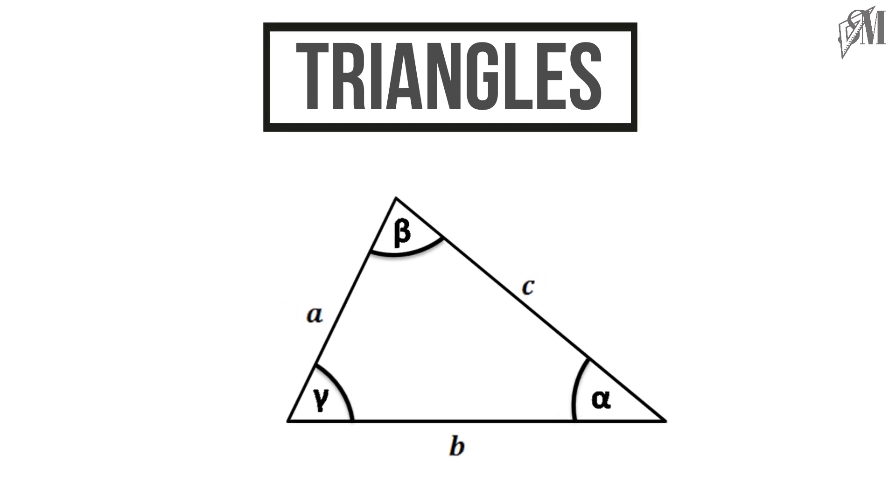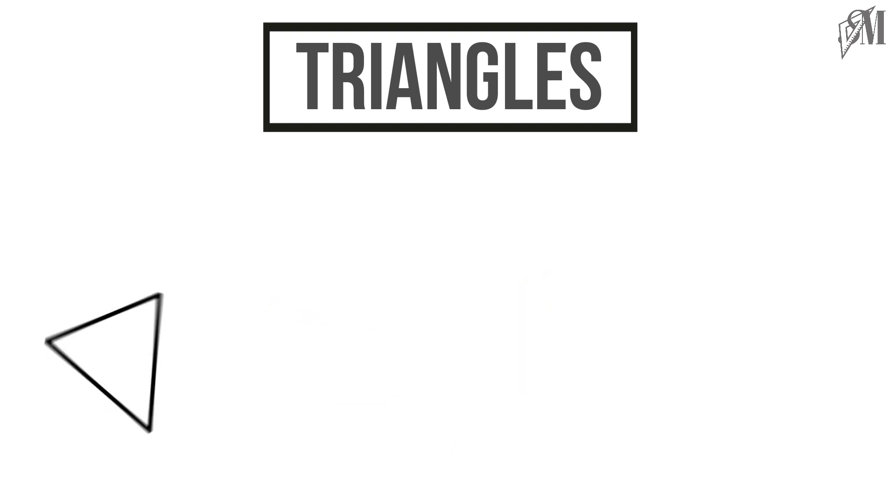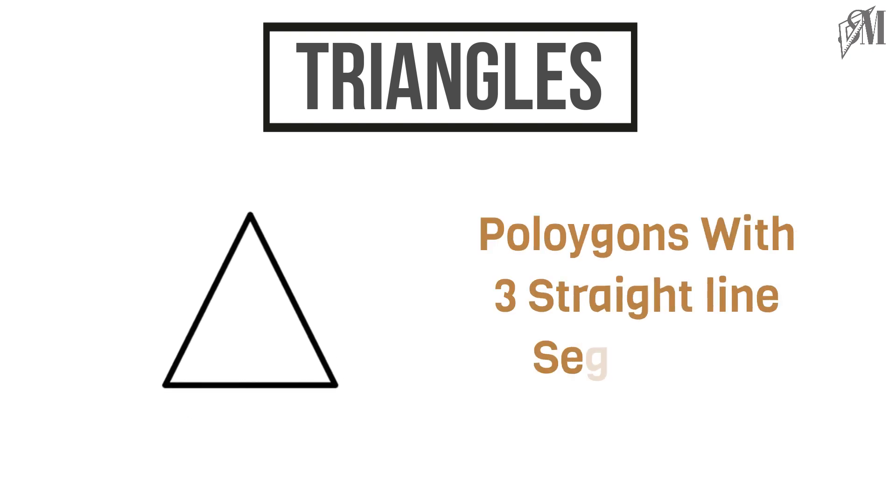Hi everyone, welcome to Smart Math Online Tutor. Here we go to learn about angles of a triangle. First, let us see what is a triangle. A triangle is a polygon with three line segments. Triangles can be divided into three types.